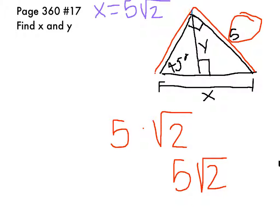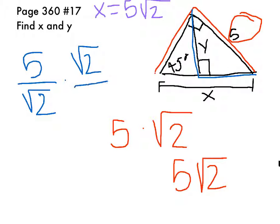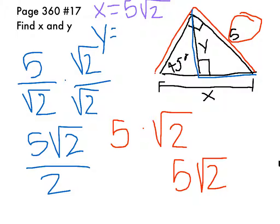Since 5 is the hypotenuse of this triangle, you divide 5 by square root 2, but since you can't have a root on the bottom, you multiply by square root 2 over square root 2, which simplifies to 5 square root 2 over 2. So y equals 5 square root 2 over 2.